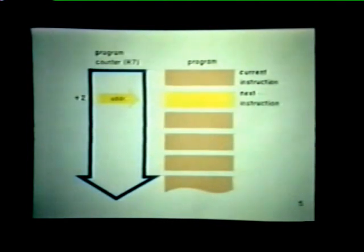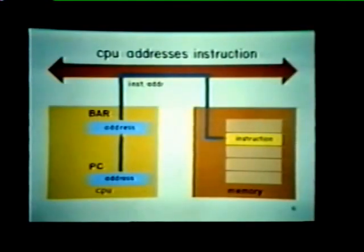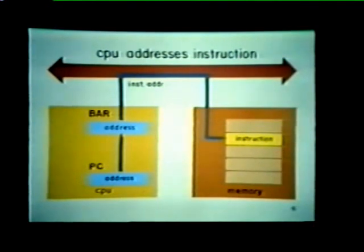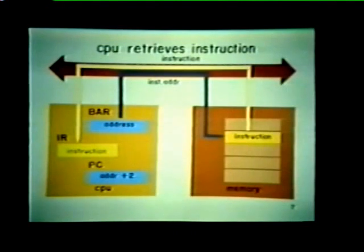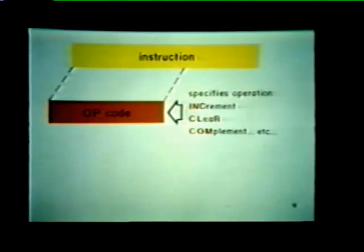Let's review the function of the program counter. The PC is automatically incremented by two each time the processor fetches another instruction in the program. The new value appearing in the program counter is the address of the next instruction to be executed. To fetch the next instruction from memory, the CPU takes the address stored in the PC and transfers it to its bus address register, or BAR. The instruction address is then placed on the unibus, and the CPU retrieves the instruction and loads it into its instruction register, or IR. The CPU then begins to decode the instruction. A portion of the decoded instruction tells the CPU what operation to perform — for example, it might tell the CPU to increment a certain value, or specify a clear or complement operation. We call this part of the instruction the operation code, or op code.